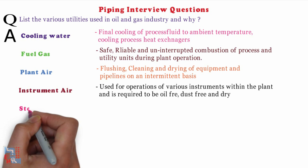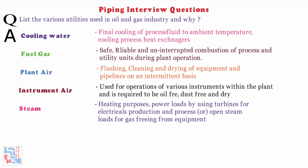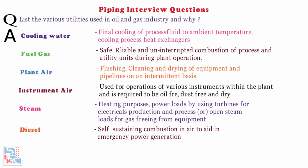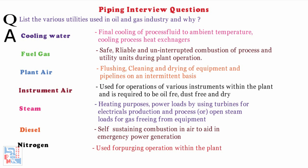Steam systems are for heating purposes, power loads by using turbines for electrical production, and process or open steam loads for gas freeing from equipment. Diesel systems are for self-sustaining combustion in air to aid in emergency power generation. Inert gas systems are used for purging operations within the plant.